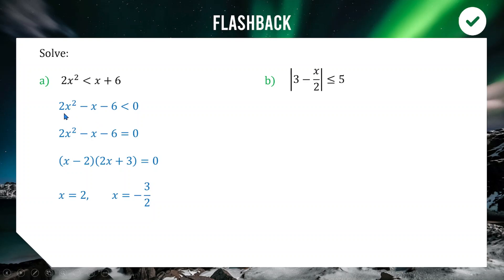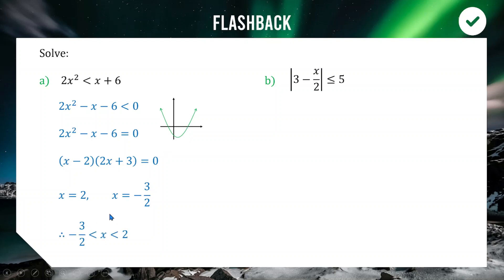This quadratic has a positive coefficient on x², so it's concave up. We want where it's less than zero — that's below the x-axis — which is between the two values of −1.5 and 2. So our solution is −3/2 < x < 2.